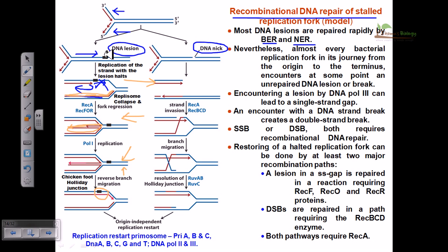If the cell needs to remove the lesion, it must go with excision repair systems like nucleotide excision repair or base excision repair. But when they do not have access to the proteins needed for base excision repair or nucleotide excision repair and need to proceed with DNA replication very fast, they must go with this recombination model. Only in those conditions do they use recombination; in normal cases, they go with base excision and nucleotide excision repair systems.